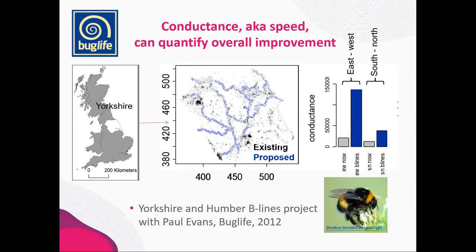Here's an example of Buglife's proposed bee lines in Yorkshire and Humber. They have their existing habitat in black and their proposed restoration scenario in blue. Creation of these restoration areas has started, but we modelled what would happen if all of this habitat was created — how it would affect the conductance from east to west and from south to north. Using a simple bar chart on the right, you can compare connectivity of the landscape as it is now in grey and how it would be under a full restoration scenario in blue.